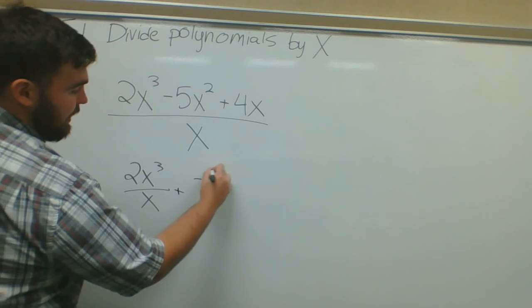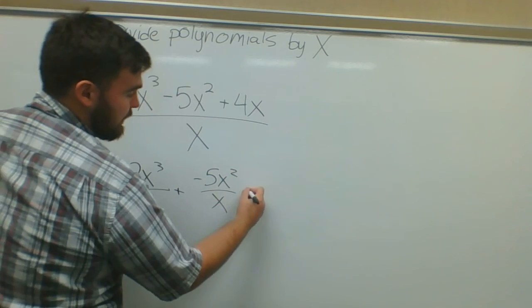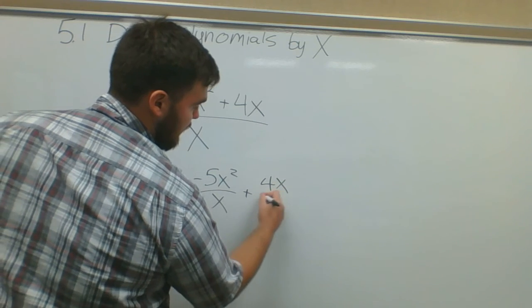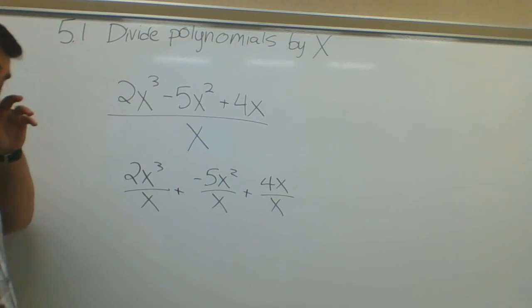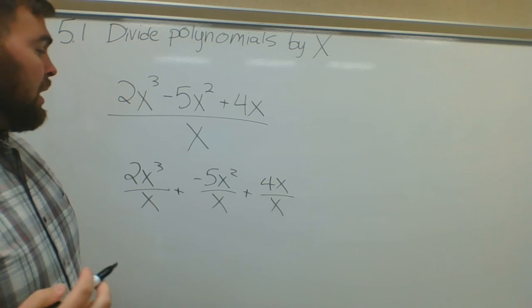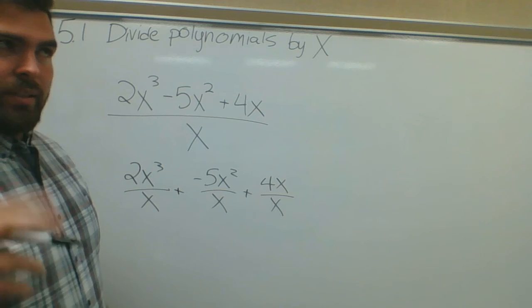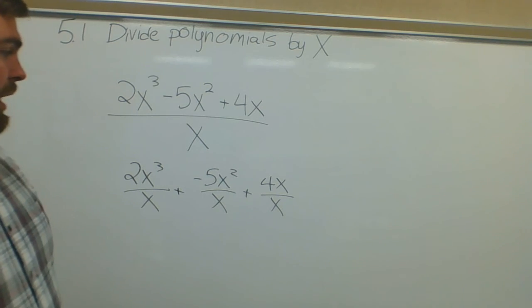Plus negative 5x squared over x plus 4x over x. Okay, I don't teach you guys a shortcut way to do it. I admit it's very intuitive, but this is more what we're looking for in this section. If I looked at each one of these individually it'd be much easier, right? So 2x to the third over x.